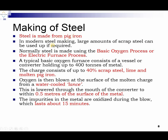Steel is made from pig iron. In modern steel making, large amounts of scrap steel can also be used. Steel is normally made using the basic oxygen process or the electric furnace process. A typical basic oxygen furnace consists of a vessel or converter holding up to 400 tons of metal. The charge consists of up to 40% scrap steel, lime, and molten pig iron. Oxygen is then blown at the surface of the molten charge from a water-cooled lance, lowered through the mouth of the converter to within 0.5 meters of the surface. The impurities in the metal are oxidized during the blow, which lasts about 15 minutes.